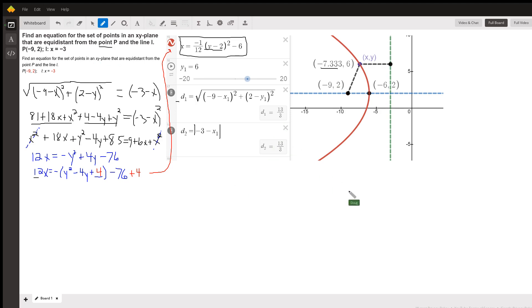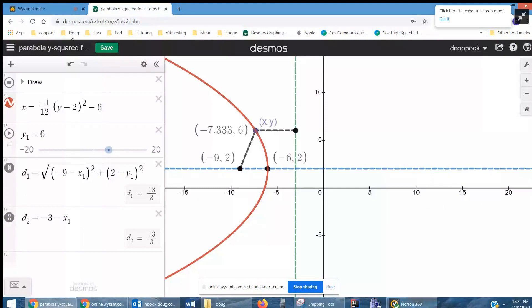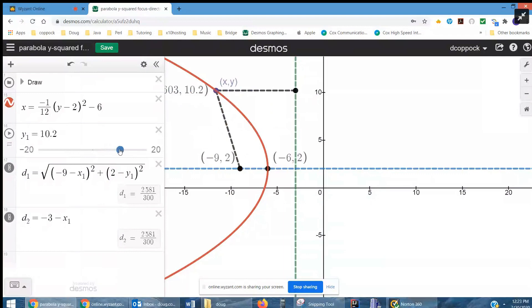Now if I share my screen and go to Desmos, here's a picture of this parabola. And what I'd like you to focus on is these d sub 1s, d sub 2s. As I change the y value, that point moves along the parabola, but those d1, d2s remain the same.